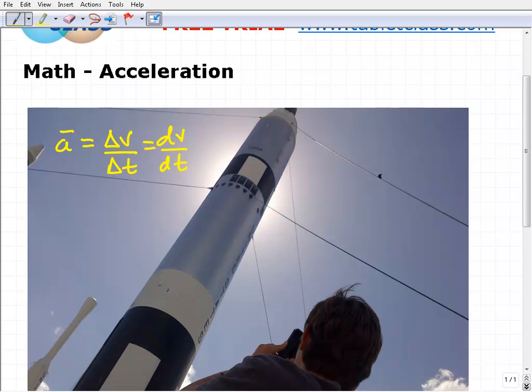But when I explain it, it's not that difficult of a concept to understand. The Delta V is the change of velocity or the difference in velocity or speed over the change in time.